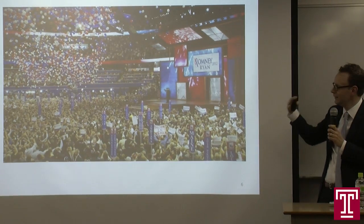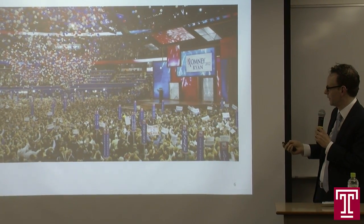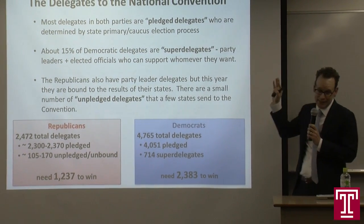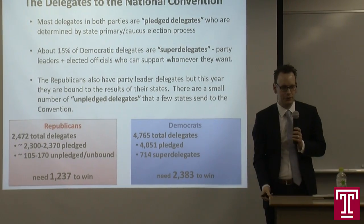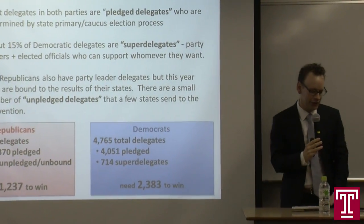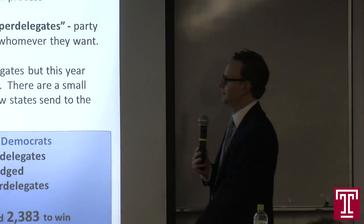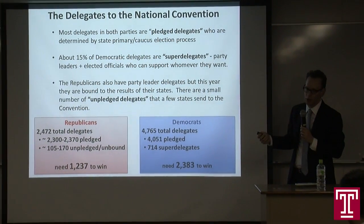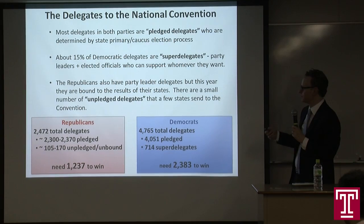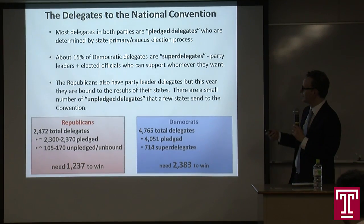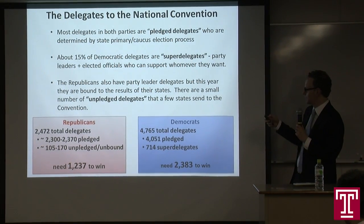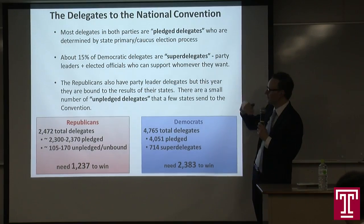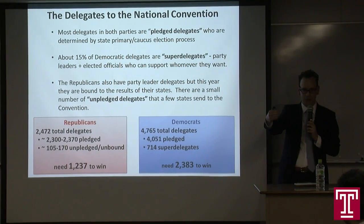Most delegates in both parties are called pledged delegates, determined by the elections in the states and caucuses. If Trump wins the most votes in New York State, he gets the most delegates from New York. The basic point is: pledged delegates are based on the results of regular members of the public going to vote in these elections.